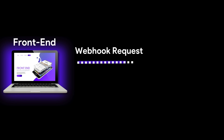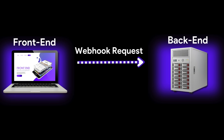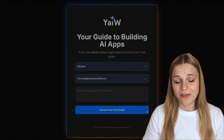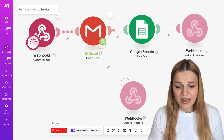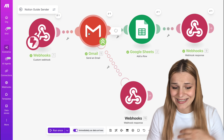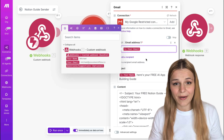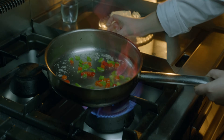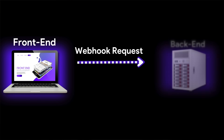Now that your restaurant's ready, you're going to need a waiter — someone to take orders, send them to the kitchen, and bring the meals back out. That's going to be a webhook. It connects everything, lets you see what's happening in the background, sending information back and forth. So when a user presses 'Access Your Guide,' the name, email, and message are sent to the back end through this webhook, and we're going to set it up using a free tool called Make.com.